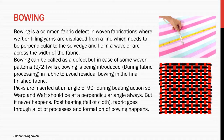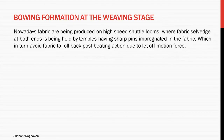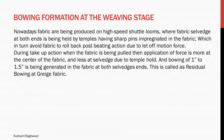But it never happens. Post beating, at the fell of cloth, fabric goes through a lot of processes and formation of bowing happens. Bowing formation at the weaving stage: nowadays fabrics are being produced on high speed shuttle looms where fabric selvedge at both ends is held by temples having sharp pins impregnated in the fabric, which avoid the fabric from rolling back post beating due to let-off motion force. During take-up action, the application of force is more at the center of the fabric and less at the selvedge due to temple hold, and bowing of 1 inch to 1.5 inch is generated at both selvedge ends. This is called residual bowing at gray fabric.